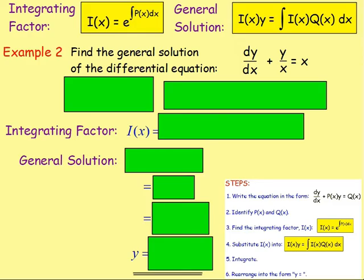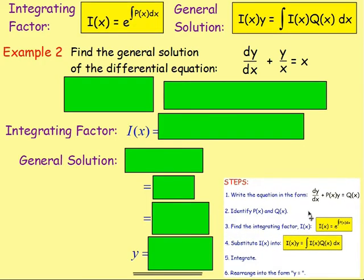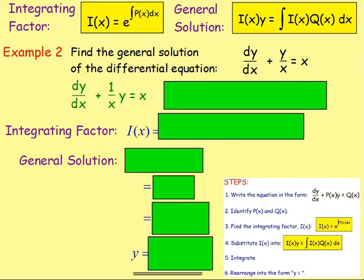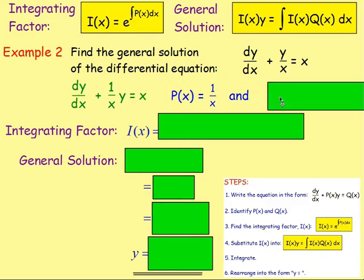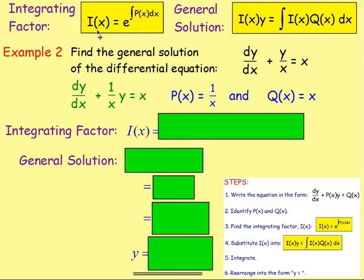Example 2: find the general solution of the differential equation dy/dx plus y over x equals x. Once again, we are following these steps. We need to write the equation in the form dy/dx plus something y equals something. Here we've more or less got that — we've got the dy/dx, but you may wish to rewrite y over x: if you take the y to the side, you could think of that as 1 over x times y. From there, it is easy to identify P(x) and Q(x). P(x) is going to be 1 over x, and Q(x) would just be x. P(x) is whatever is in front of y, and Q(x) is whatever is on the right-hand side. We know from there we are solving this first-order differential equation, so we get the integrating factor.